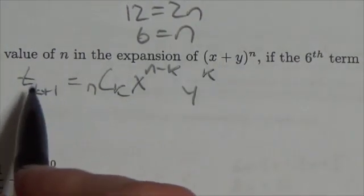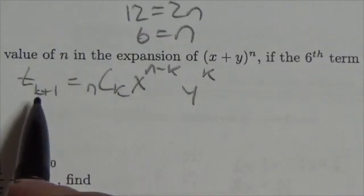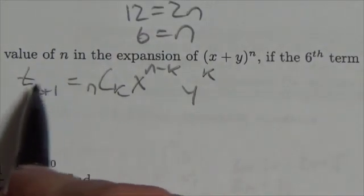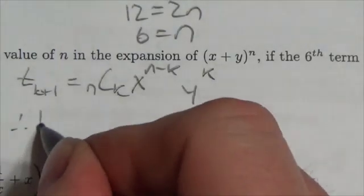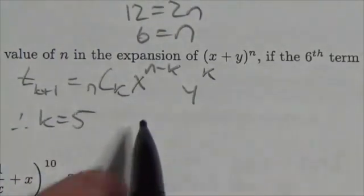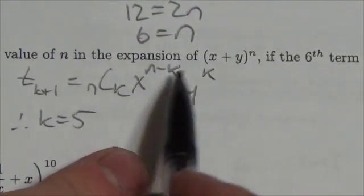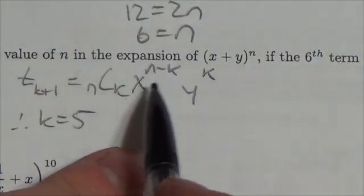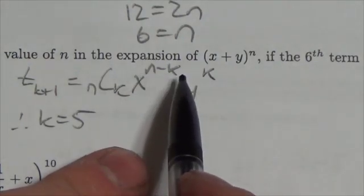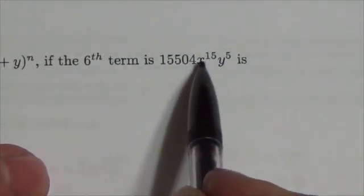I'll do it this way. I'm looking for the sixth term which means k here must have been 5. Therefore k is equal to 5 which means look at this right here because the exponent on the x has got n and k in it. Well look at the term that I've got here. Look at the x, it's got to the power of 15.